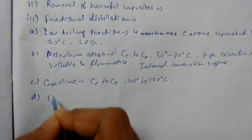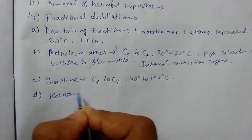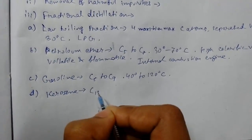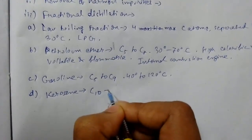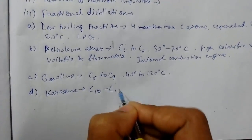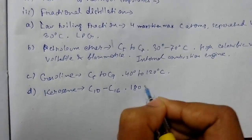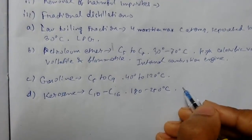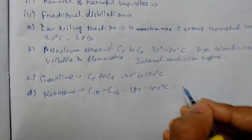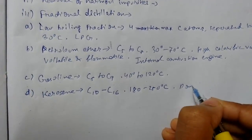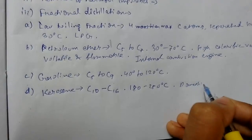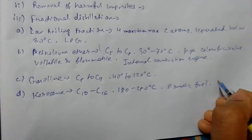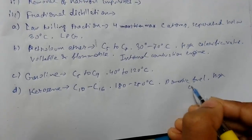Next we have kerosene, which comprises carbon atoms of C10 to C16, with a boiling point of 180 to 250 degrees Celsius. It is highly flammable and has a high calorific value.